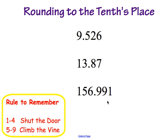So when we are rounding, the first step is we want to know what we are rounding to. So we are rounding to the tenths place. We are going to underline the number in the tenths place in each of these problems. The tenths place is the number directly after the decimal. So we are underlining that first number after the decimal in each problem. Now our next step is we are going to be using the number to the right of that underlined number to help us decide how to round. So we are going to look at the rule in the left corner to remember.